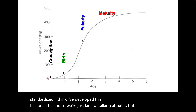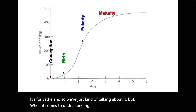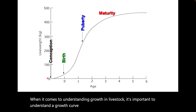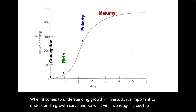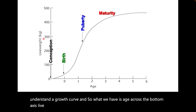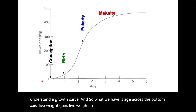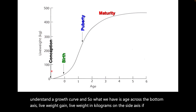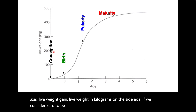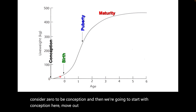When it comes to understanding growth in livestock, it's important to understand a growth curve. What we have is age across the bottom axis and live weight in kilograms on the side axis. If we consider zero to be conception, we're going to start there and move out to birth, where we see that last little bit of fetal growth right before birth.